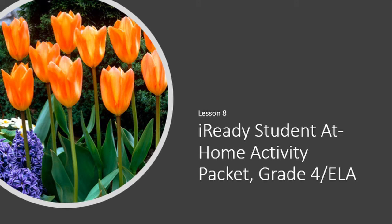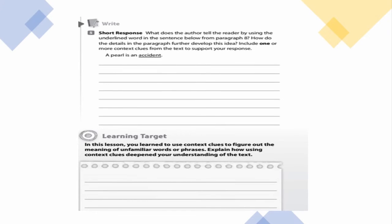Hi, and welcome back for Lesson 8 of our iReady Student at Home Activity Packet for Grade 4. Today's lesson, we will look at developing a short written response for our skill — using context clues to determine the meaning of unfamiliar words. Basically, in today's lesson, we are supporting our unfamiliar word or our word that is used in the sentence. Let's look at our directions.